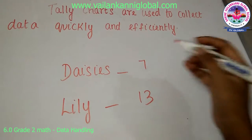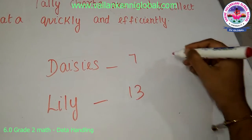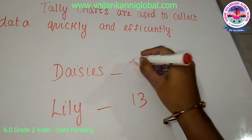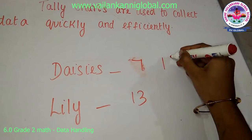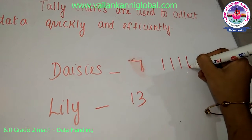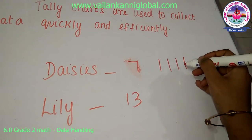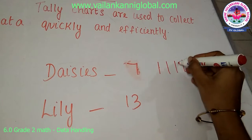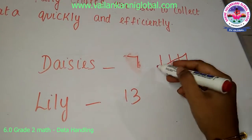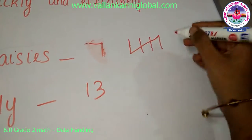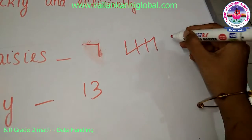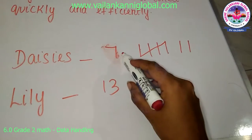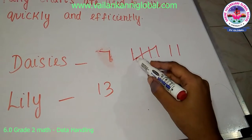It's simple — you draw lines. For seven, draw one, two, three, four lines, and when it comes to five, you cross it diagonally. That group of five, plus two more lines, gives you seven. This is how you represent seven using a tally chart: five plus two is seven.